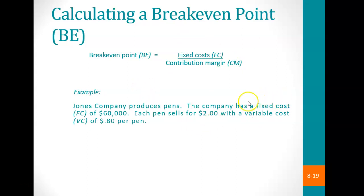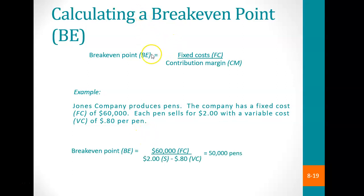In our case, the company has fixed costs of $60,000. Each pin sells for $2 with a variable cost of $0.80 per pin. We ask: how many pins must we sell to break even — meaning total cost equals total sales? Using the break-even formula: $60,000 divided by the contribution margin of $1.20 per pin means we must sell 50,000 pins to break even.